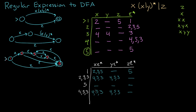Now we identify the starting and accepting states for the DFA. The starting state is the one containing state one. The accepting states are any that contain the original accepting state five — so two, three, five is accepting; five is accepting; and four, five, three is accepting. We have one starting state and three accepting states.